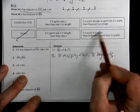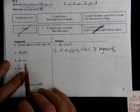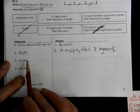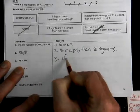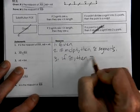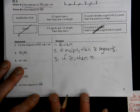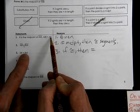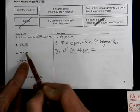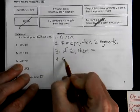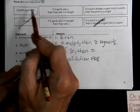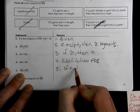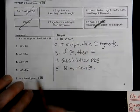Notice the only difference between two statements is the sign — congruent versus equal. So: if congruent segments, then equal segments. We know MB equals AR and AR equals RM, so MB equals RM by the substitution property of equality. Then we convert back: if equal, then congruent.